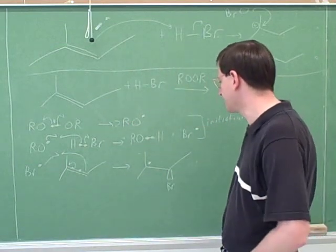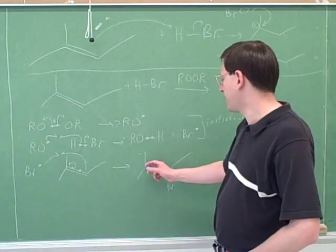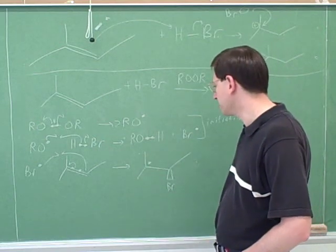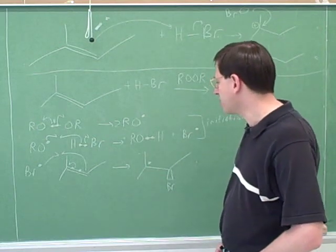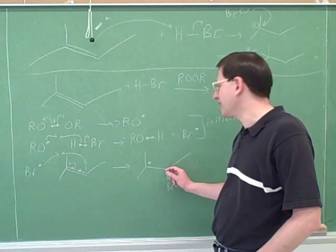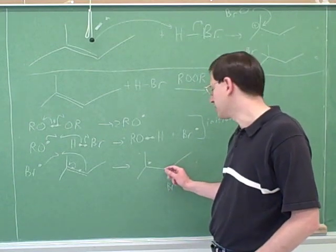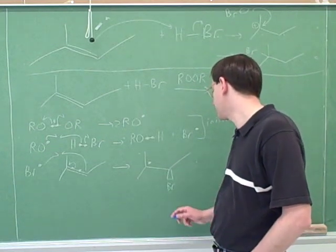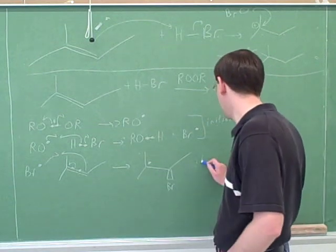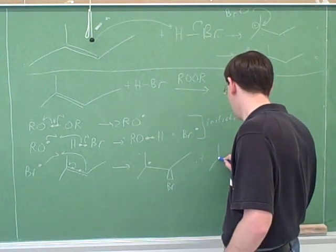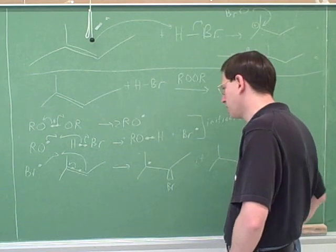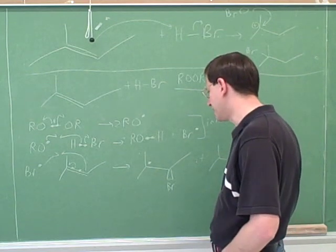So the bromine attacks. Why is the radical ending up over here? Because this is the more substituted carbon. And you saw that here the bromine was forming a stereocenter. Since we're forming a stereocenter, we're going to get two different products — one on the wedge and one on the dash.